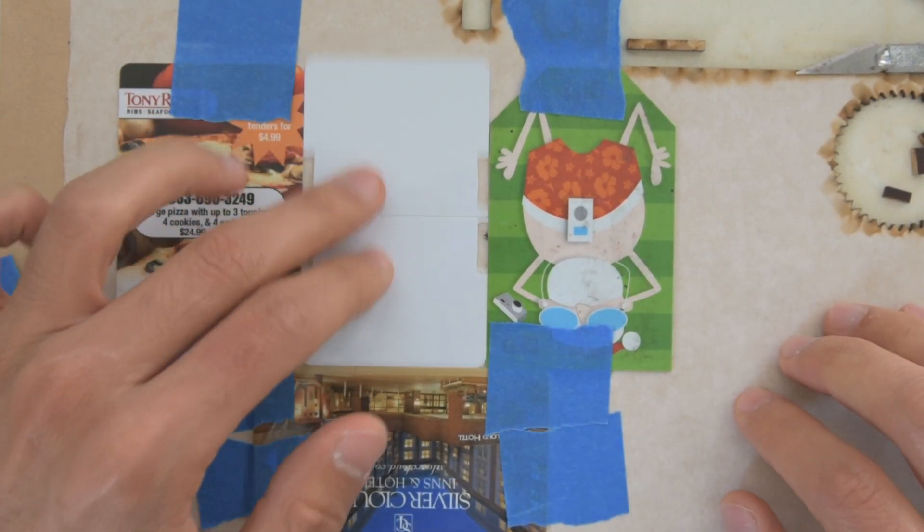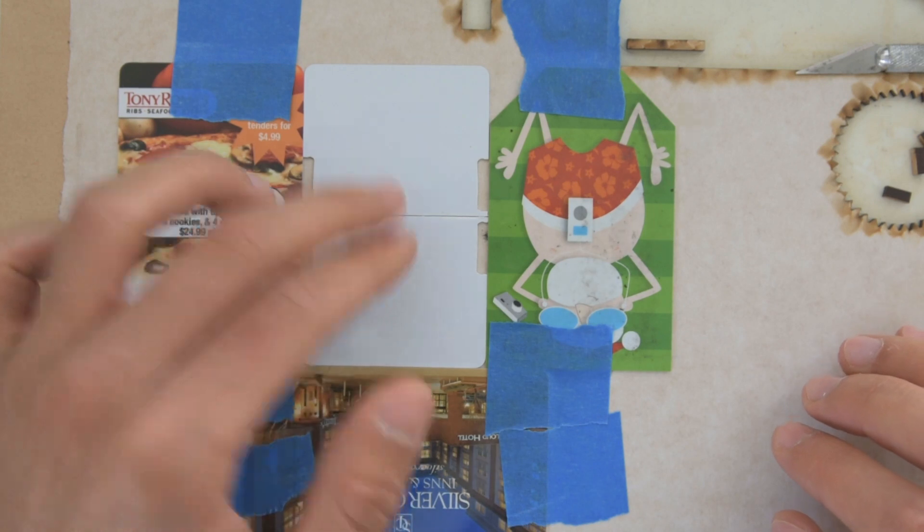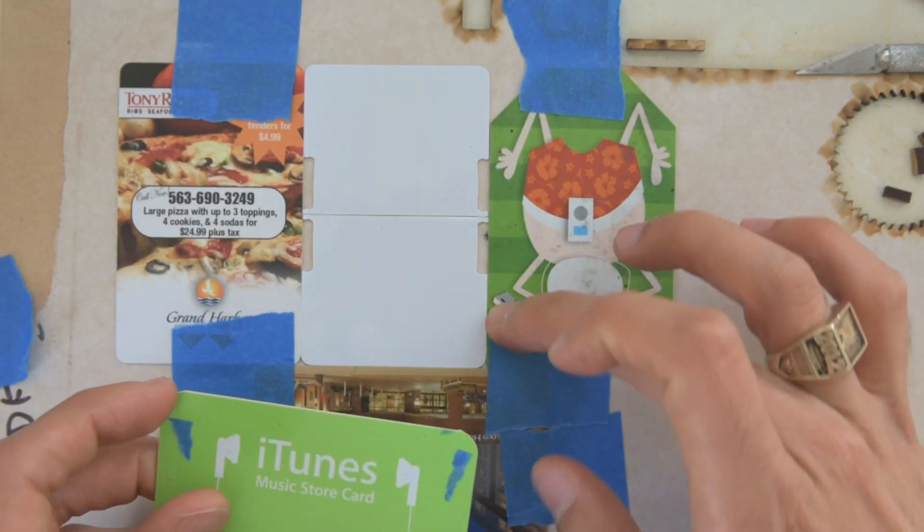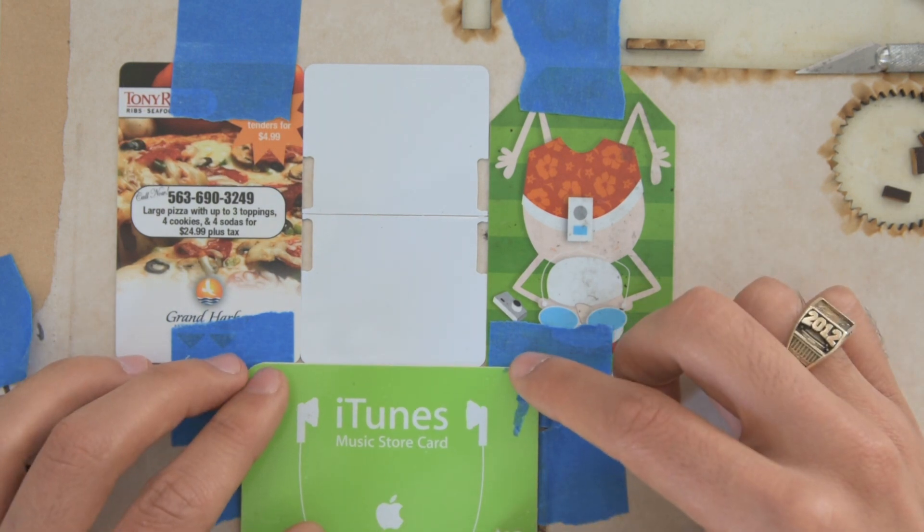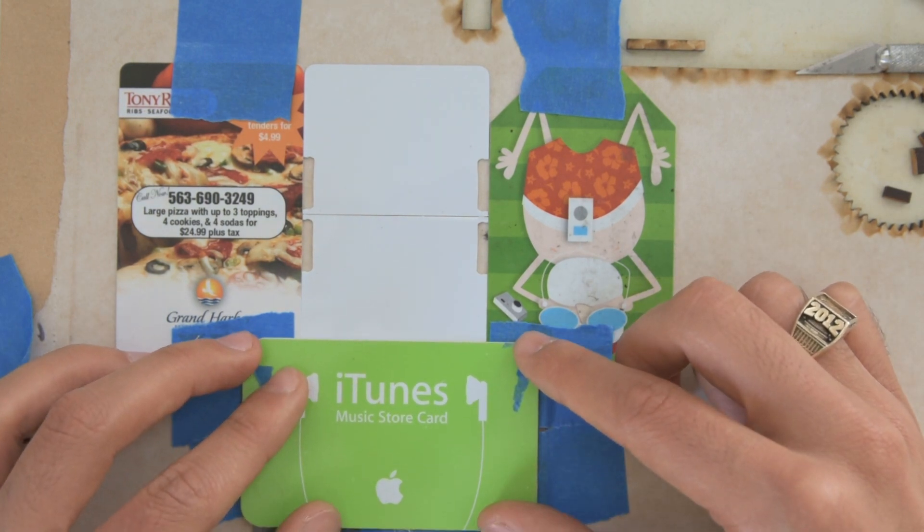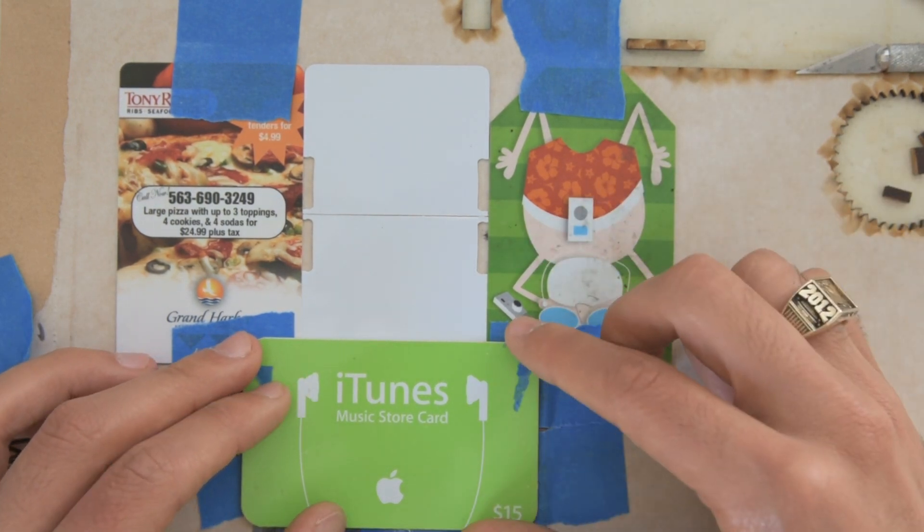And once we've got that, these fit in here nicely, we're going to take our fourth card, and this is what's going to allow us to align the bottom of the letters consistently on all of the flaps.